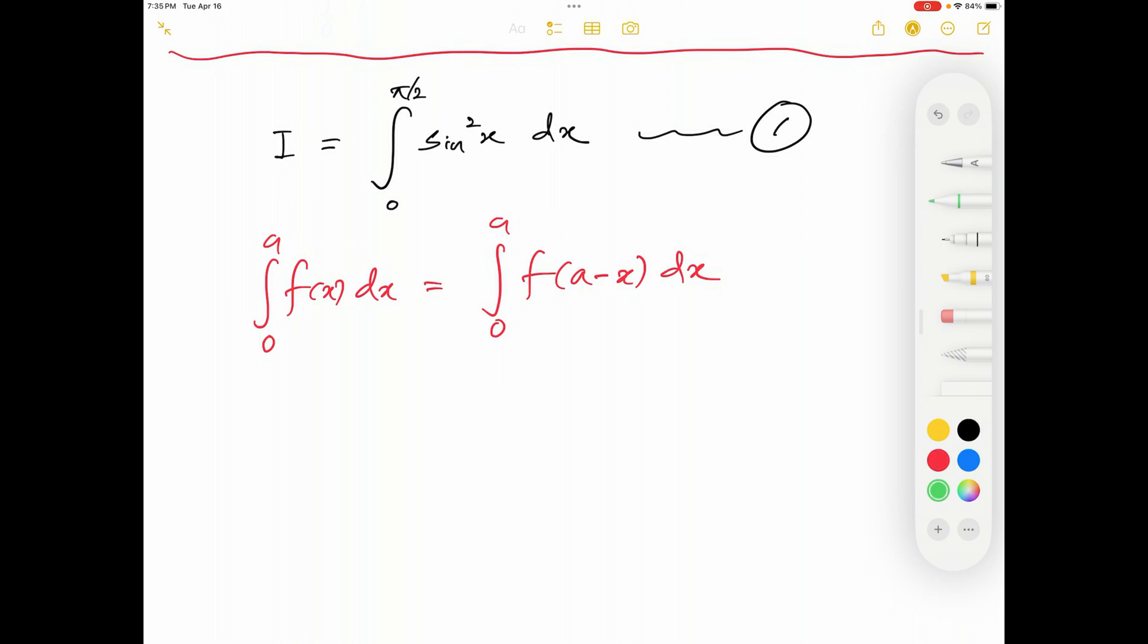To satisfy the theorem I need lower limit to be 0. Of course, that's the case with this given question. Right here I have 0 as the lower limit. Instead of a I have pi by 2 in the given question. Now I can write that same given integral i this way.